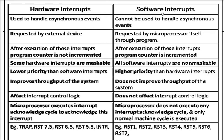For software interrupts, after execution, the program counter is actually incremented. Some hardware interrupts are maskable — like 7.5, 6.5, etc. All software interrupts are non-maskable. Though they have high priority, please remember: software interrupts have higher priority than hardware interrupts, but all software interrupts are non-maskable.